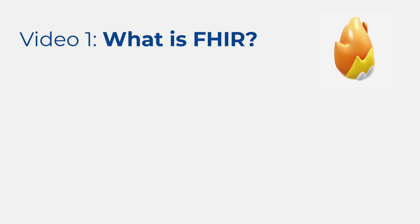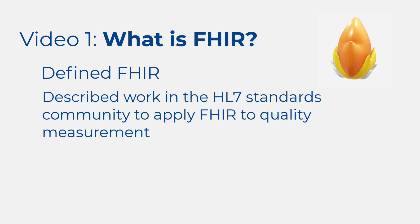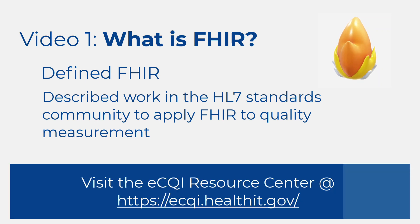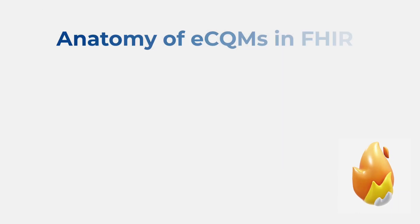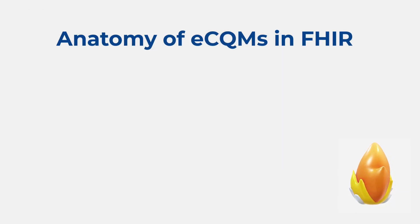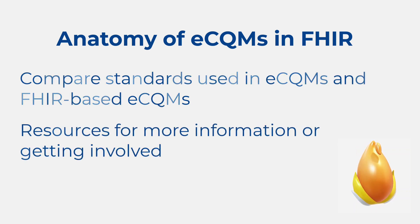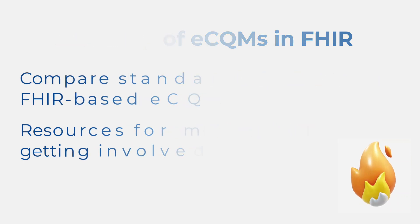In our first installment, we defined FHIR and described the work in the HL7 standards community to apply FHIR to quality measurement. You can find that video on the eCQI Resource Center. In this segment, we'll take a closer look at the anatomy of an electronic clinical quality measure expressed in FHIR. We'll compare the standards used in current eCQMs and FHIR-based eCQMs, and we'll identify resources you can access to find more information or get involved in the advancement of FHIR-based quality measurement.